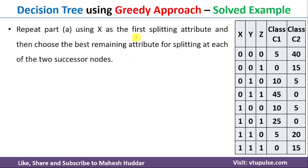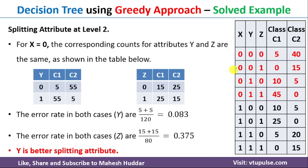Now we will consider X as the root node and try to build the tree, and then we will get the overall error rate in this particular case. If we consider X as the root node, we need to consider two possibilities: X equal to 0 and X equal to 1 — X equal to 0 is the left subtree and X equal to 1 will be the right subtree. For X equal to 0, this is the count table for Y and this is the count table for Z. The error for Y equals the minimum between these two, which is 5, plus the minimum between these two, which is 5, divided by the total 120 examples — that is 10 divided by 120, which equals 0.083.